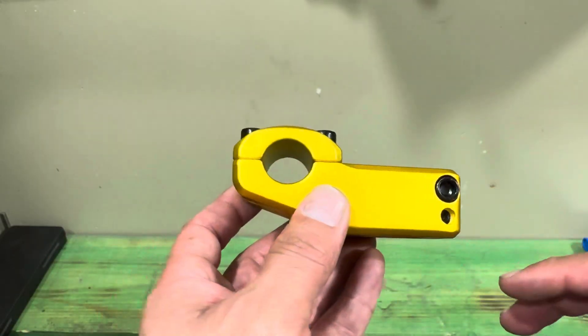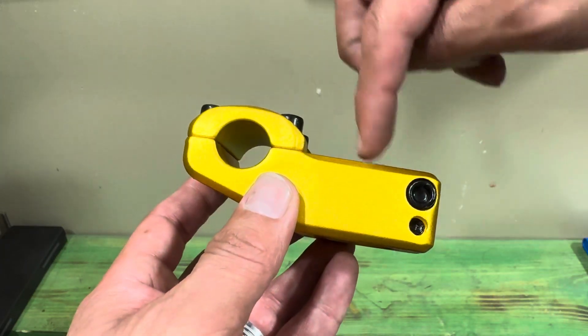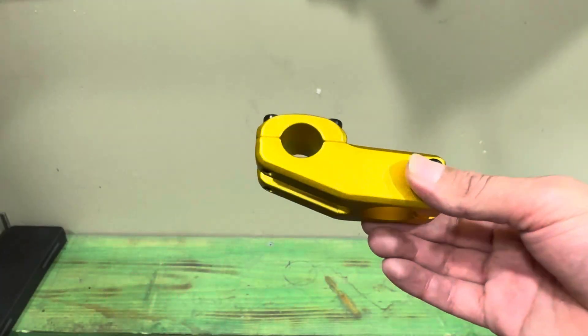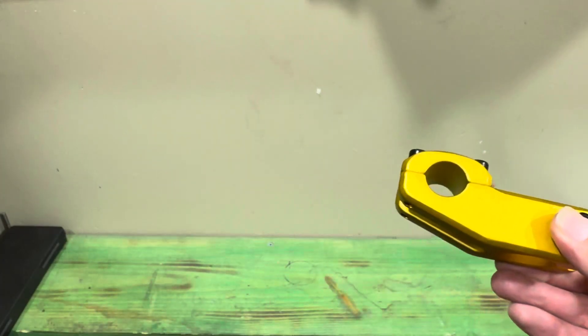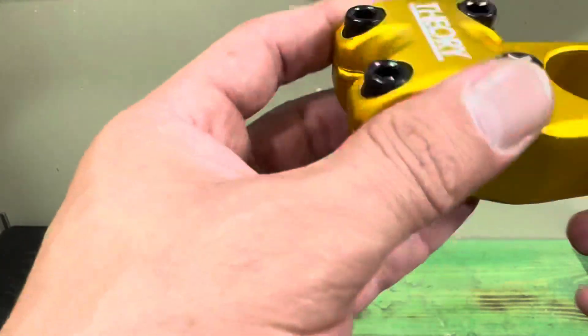This bad boy has a 50 millimeter reach, which is from the center of this tube to the center of this tube. Yeah, it just looks like a pretty solid stem.